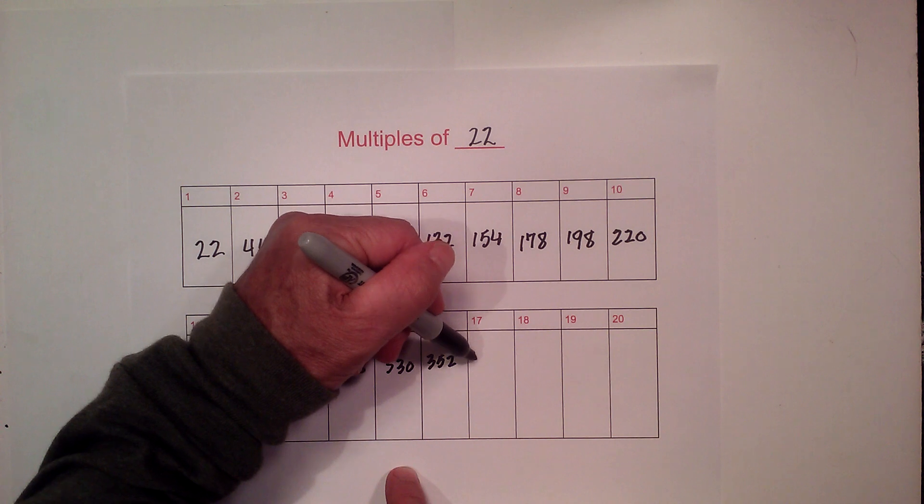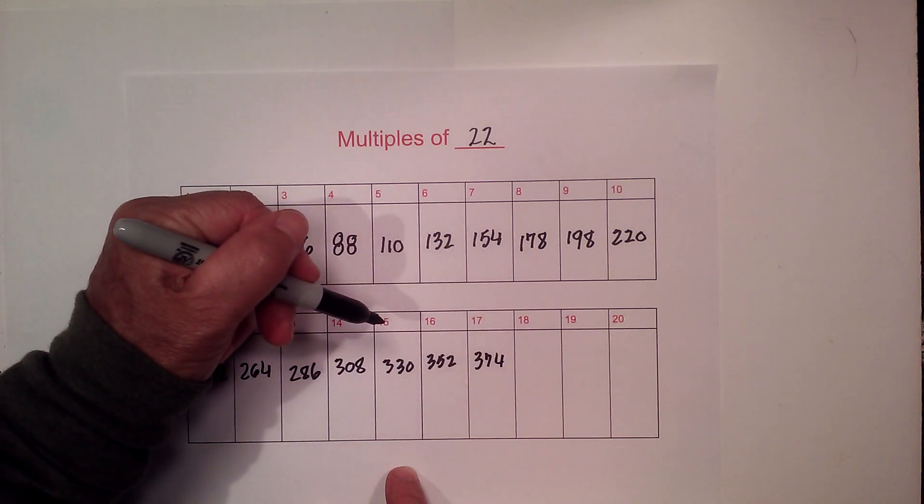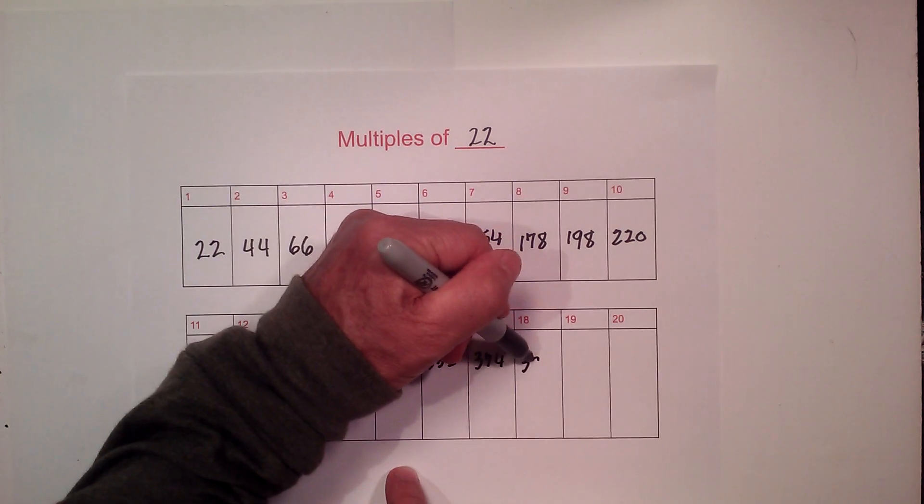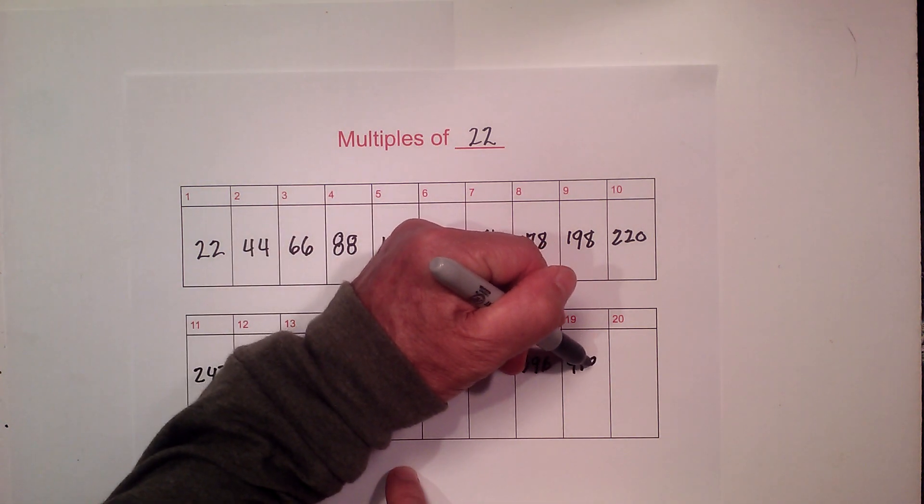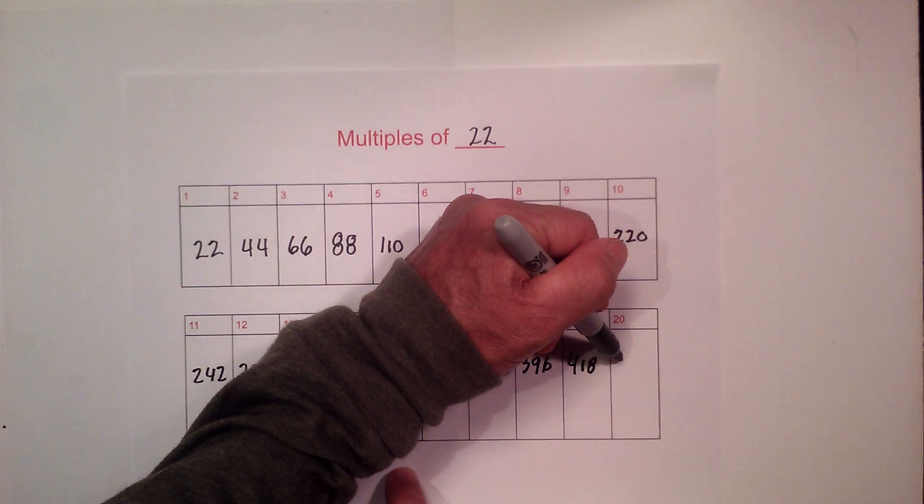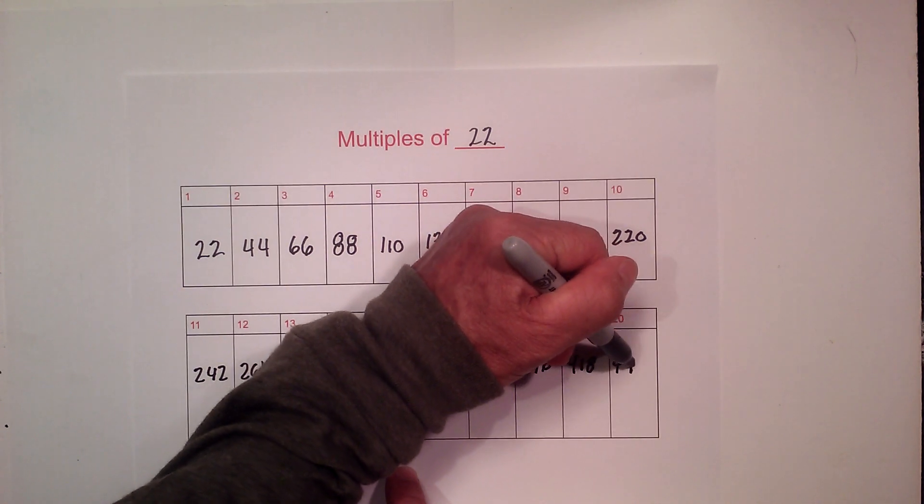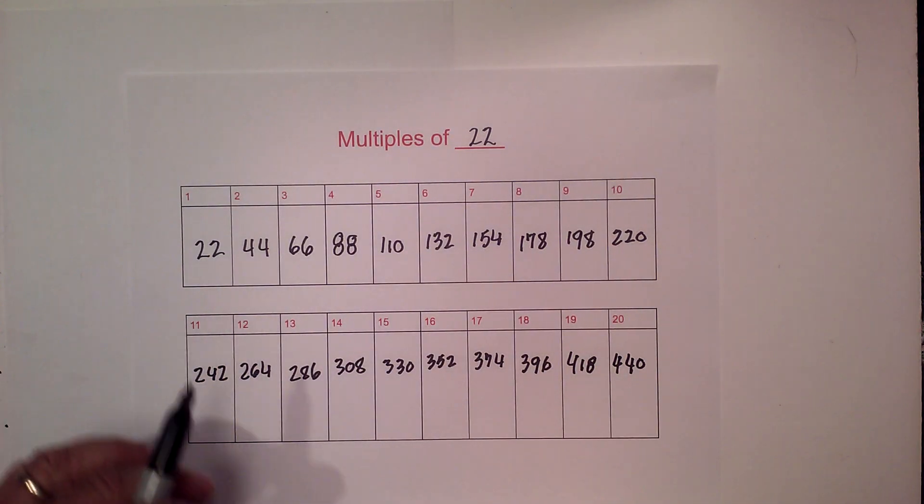17 is 374, 18 is 396, 19 is 418. And 22 times 20 is 440. Now let's go over the